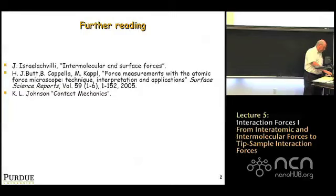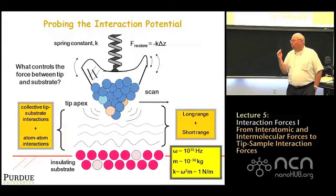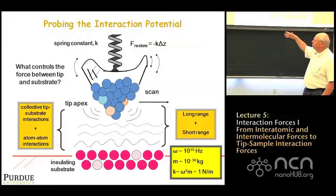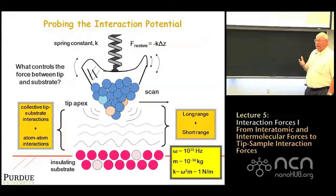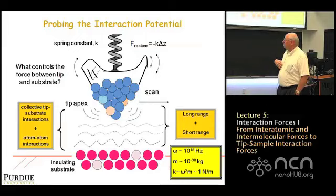What we're basically talking about is what at the atomic length scale determines the force between a tip and a substrate. The answer is basically a combination of long-range and short-range electrostatic interactions. Fundamentally, the interaction between the tip and the substrate is electrostatic in nature. Now we make a lot of assumptions when we discuss this electrostatic interaction between the tip and the substrate.